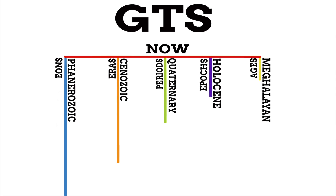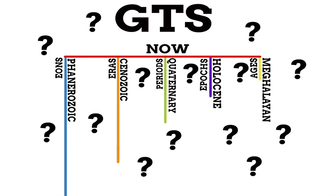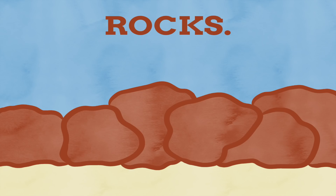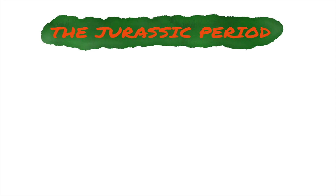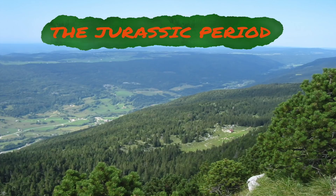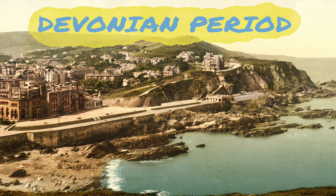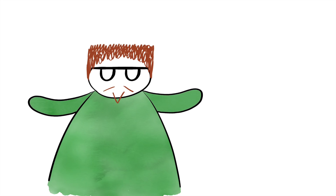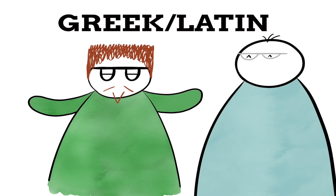But where exactly did these names come from? Names for parts of the GTS come from all different kinds of sources. A lot of the time they're named after where the rock was first studied — take the famous Jurassic period, named after the Jura Mountains, or the Devonian period, named after the English county of Devon. We also frequently use Greek and Latin terms, as scientists so often do.